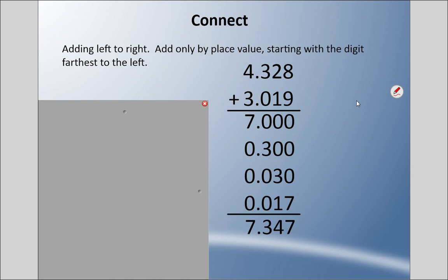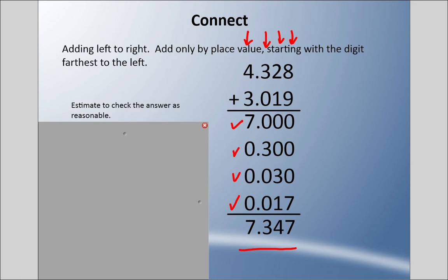Now we're going to add from left to right. In this method we only look at one place value at a time, always starting on the ones. Four plus three equals seven. In the next column, the tenths: three plus zero equals three tenths. Make sure you fill in those equivalent decimals all the way to the thousandths place. Then we deal with the hundredths: two hundredths plus one hundredth equals three hundredths. Lastly we deal with the thousandths and we have seventeen thousandths. The answer is again four and three hundred forty-seven thousandths of a million dollars.